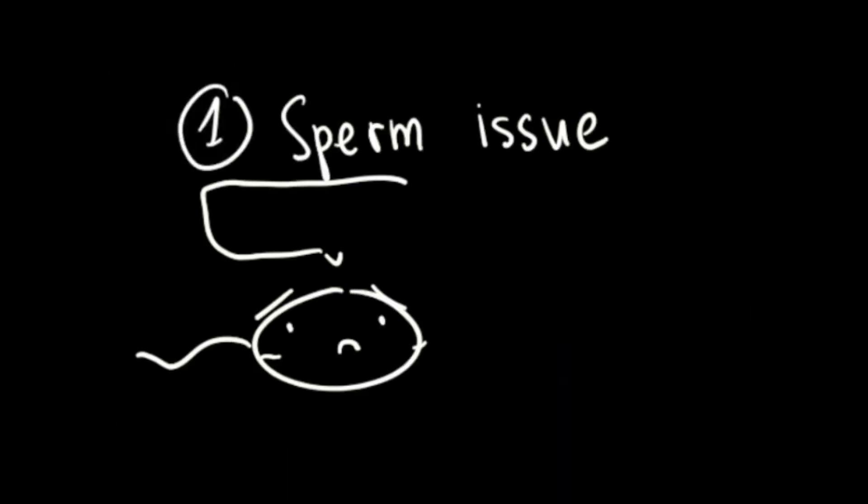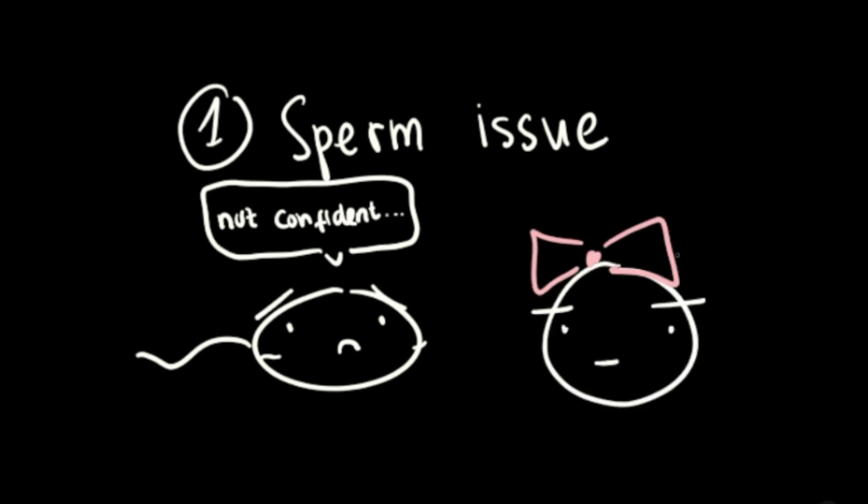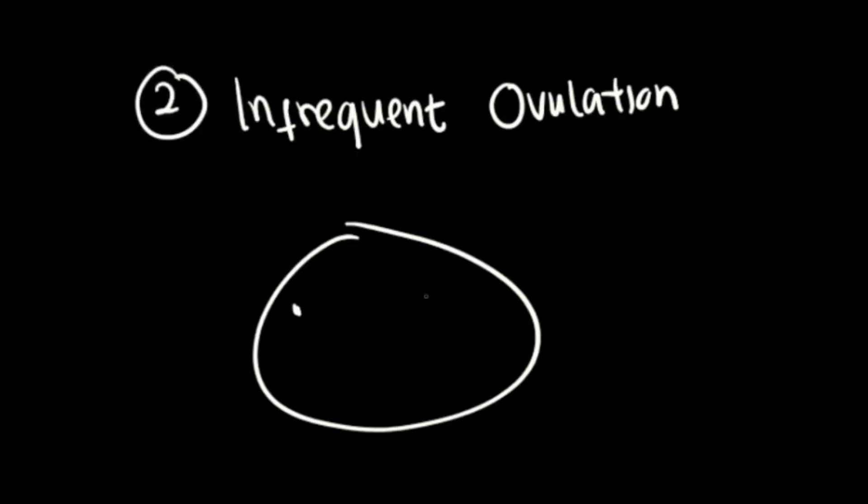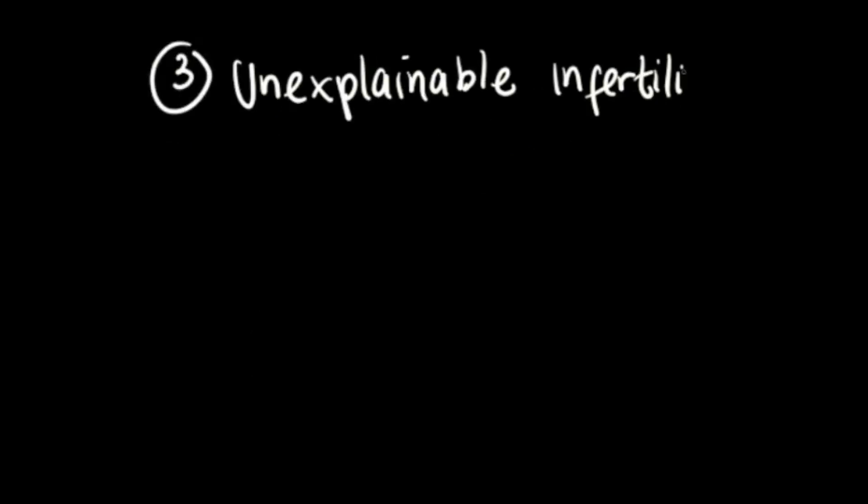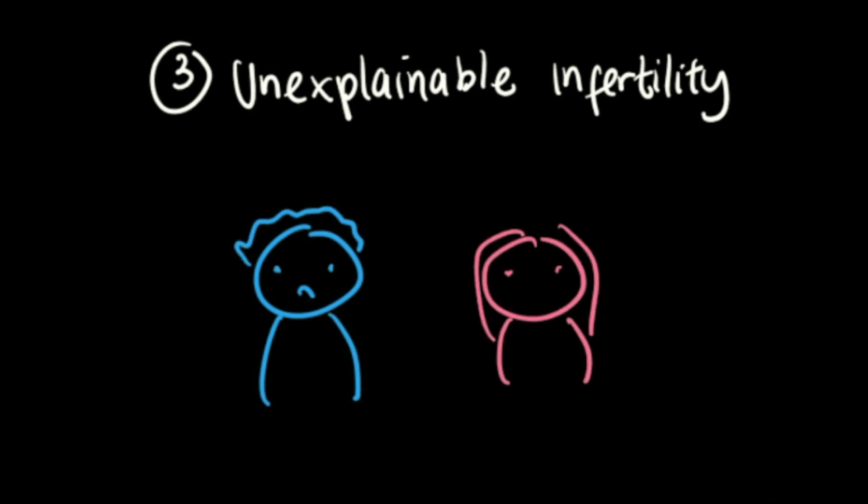ART is applicable to couples with sperm issues, when the sperm has difficulty fertilizing the egg; women who ovulate infrequently, which increases the odds of a successful pregnancy for each cycle; and couples with unexplainable infertility, as ART can circumvent many common but difficult to diagnose problems.